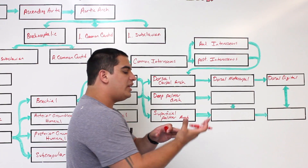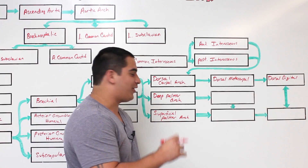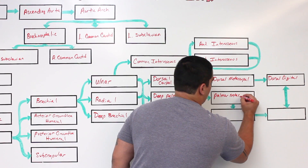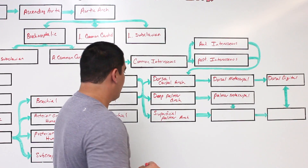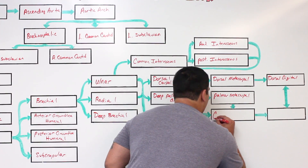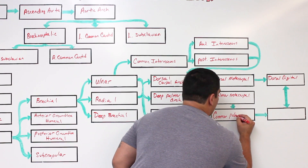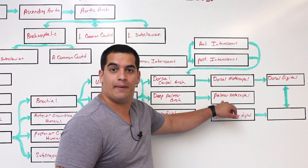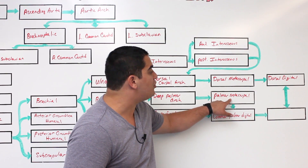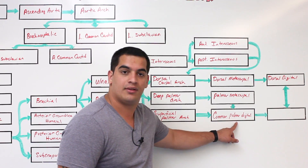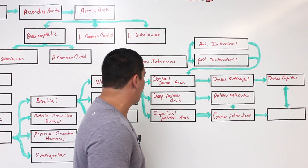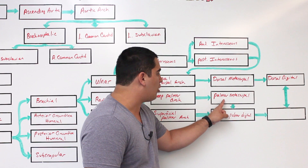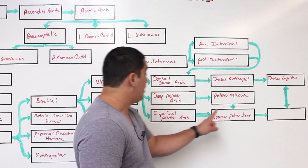The deep palmar arch gives off some small metacarpal arteries — and these are hand arteries — called the palmar metacarpal arteries. The superficial palmar arch gives off these specialized structures called the common palmar digital arteries. What's really interesting is that the deep palmar arch gives way to the palmar metacarpal arteries, which then form an anastomosis or fusion connection with the common palmar digital arteries. There are so many different anastomoses here — we're just keeping it as simple as possible.